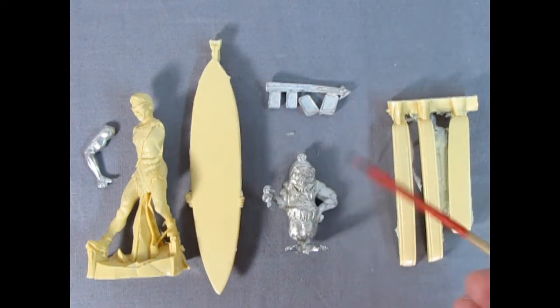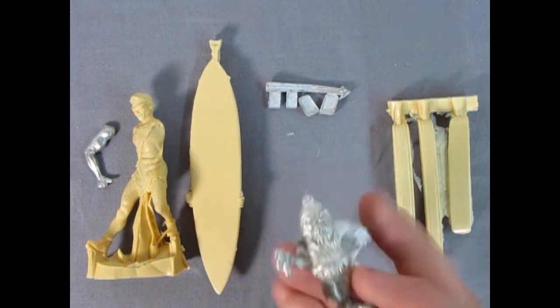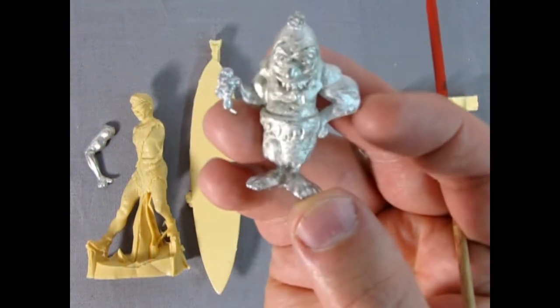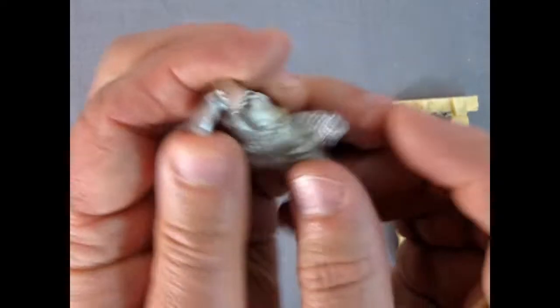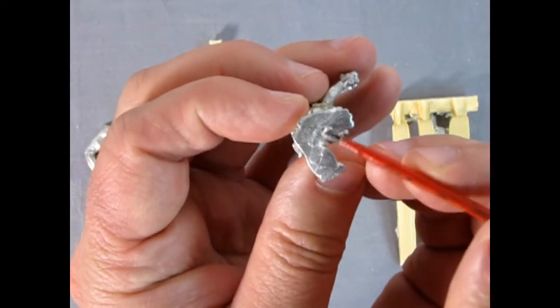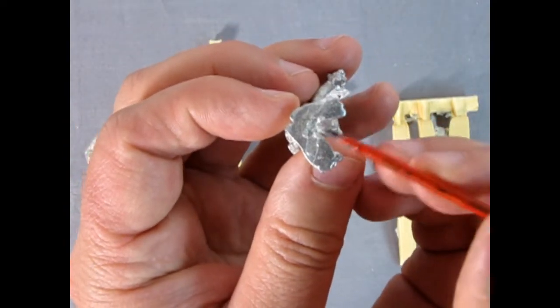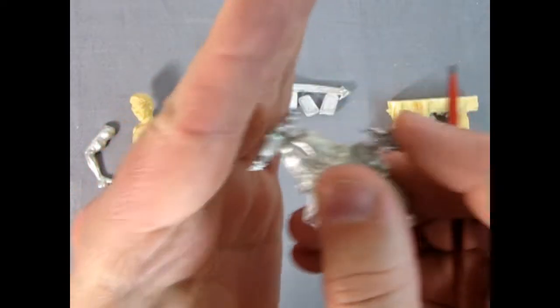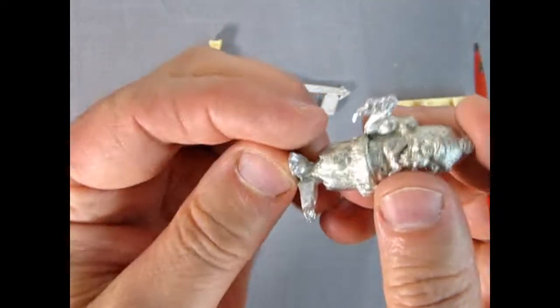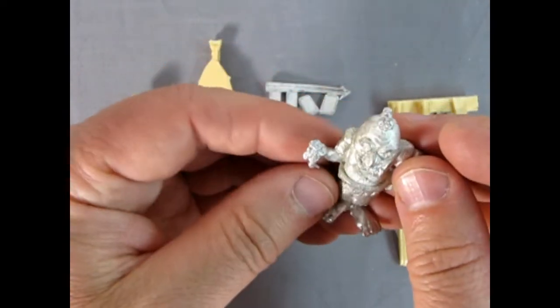This nice little gremlin type figure is really cool. He's made out of solid white metal, so in order to get them to stand properly you'll need your sandpaper block and just sand the bottom of his feet on there just to flatten it out and he'll stand up nice for you.